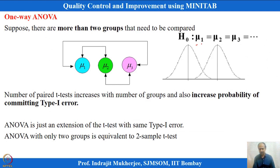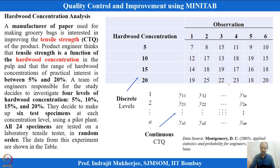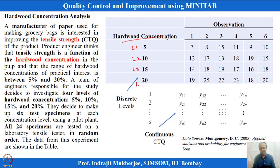In ANOVA, we compare different means and use variance information to detect mean differences — that is why it is called analysis of variance. The example used involves hardwood concentration as the factor, with levels 1 through 4, and 6 replicates at each level, giving 24 total observations.